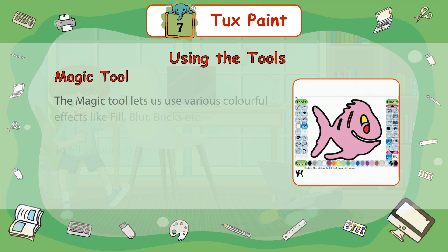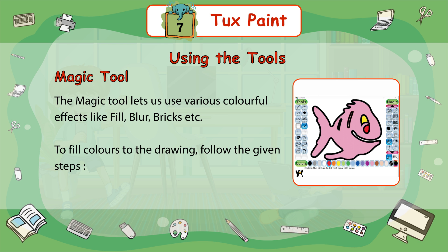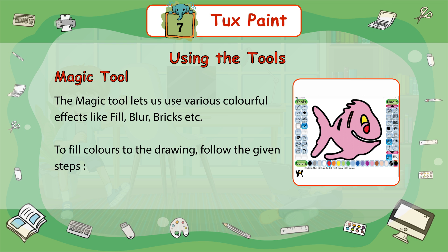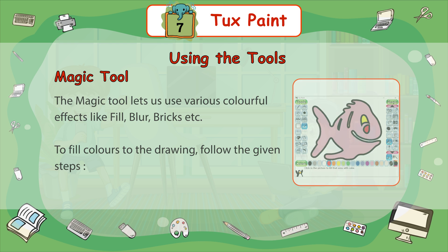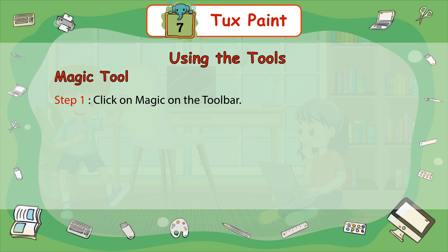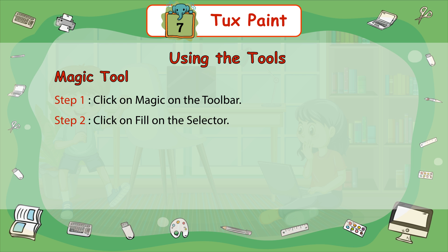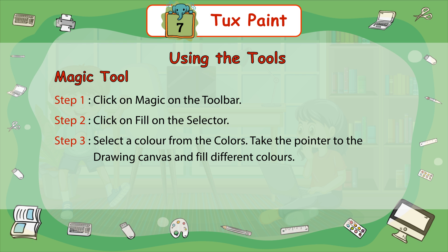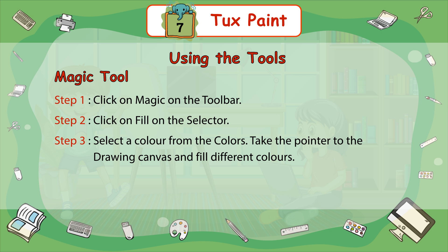Magic tool. The Magic tool lets us use various colorful effects like Fill, Blur, Bricks, etc. To fill colors to the drawing, follow the given steps. Step 1: Click on Magic on the toolbar. Step 2: Click on Fill on the selector. Step 3: Select a color from the colors. Step 4: Take the pointer to the drawing canvas and fill different colors.